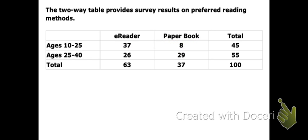How many people between the ages of 25 and 40 prefer the e-reader? Well, 25 to 40 is this row and e-reader is this column, so you just pull them down to see it — it's 26.